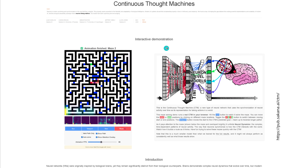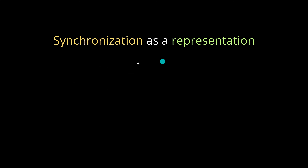They have a page at sakana.ai/ctm with an interactive demonstration — though the visualization is quite general. The key idea you really need to focus on is the synchronization matrix: which neuron fires at what time in conjunction with other neurons. In an abstract mathematical space where we examine all neurons and find different firing patterns, the synchronization matrix is established, and this forms the representation of the new AI system.